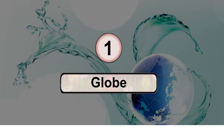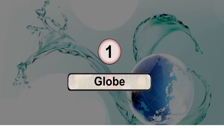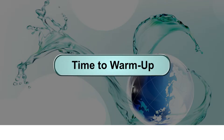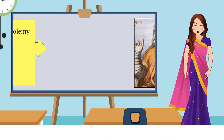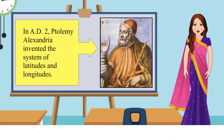Globe. Time to warm up. In AD 2, Ptolemy of Alexandria invented the system of latitudes and longitudes.